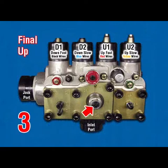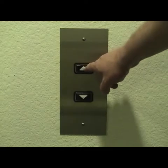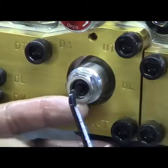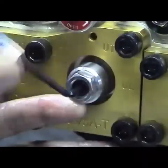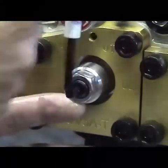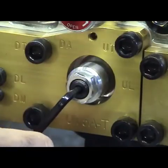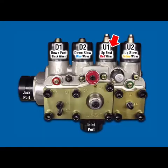UL — Up Leveling. Car at lower floor with no load. Disconnect U1. Register an up call. Turn UL counterclockwise for faster or clockwise for slower to set up leveling speed at 10 to 13 feet per minute. Leave U1 disconnected.